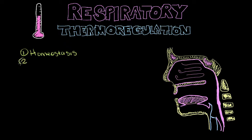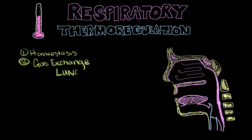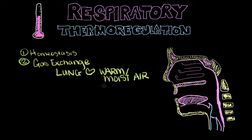The other important reason we need thermoregulation in the respiratory system is for gas exchange. Believe it or not, our lungs are really preferential to the type of air that we bring to them. Our lungs really want warm, moist air so that gas exchange is optimal. Just like for homeostasis, that's not always what we encounter in the world, so we have to have mechanisms to make that happen.